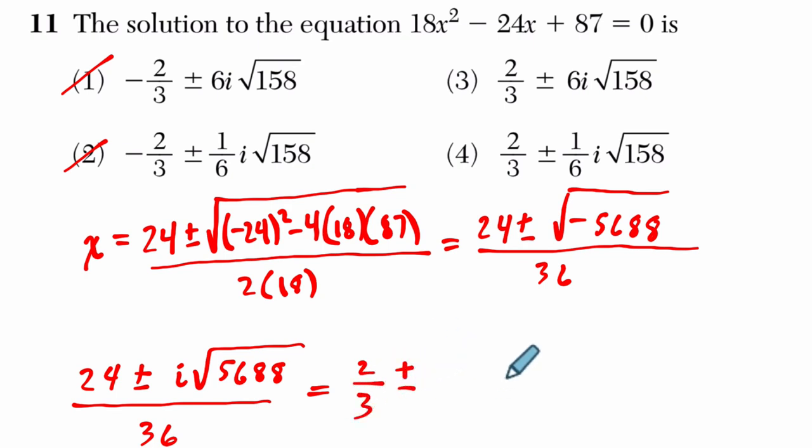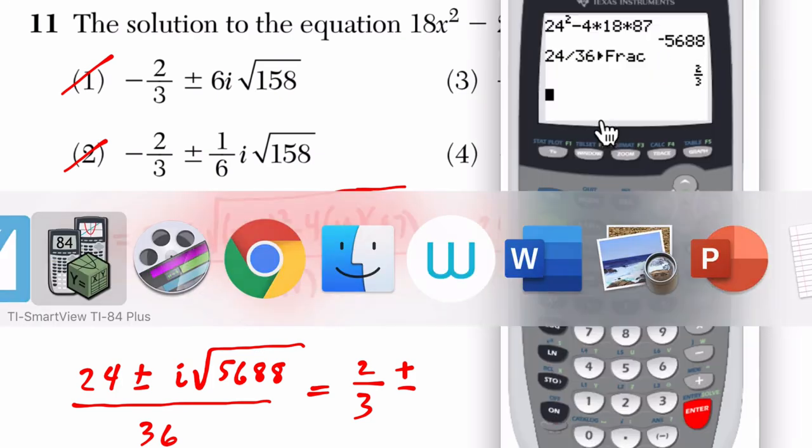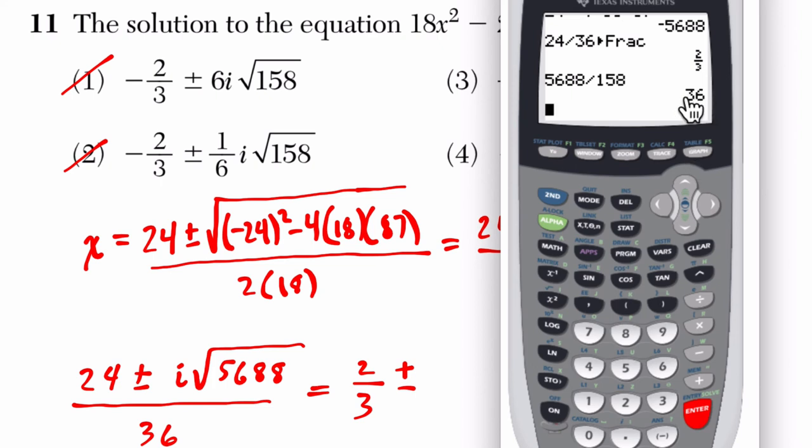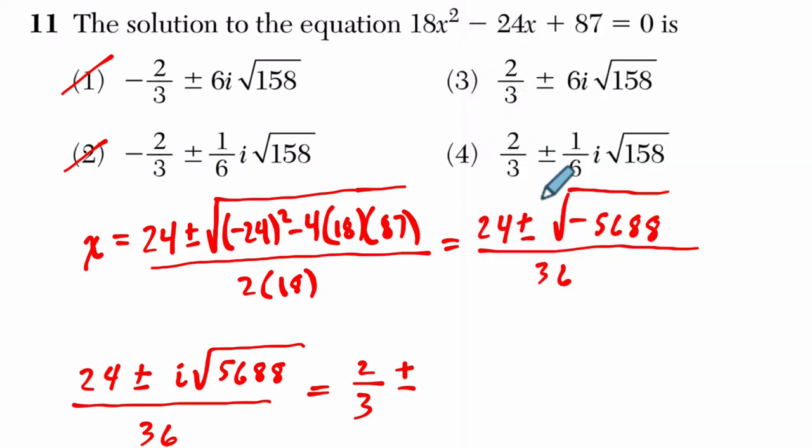Plus or minus. Well, let's go back to 158. How are we going to use it to our advantage? Well, I'm going to take 5688 and divide it by 158. Let's see what I get. Sweet. I get 36, which is a perfect square. So this is i times the square root of 36 times 158 over 36.